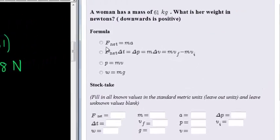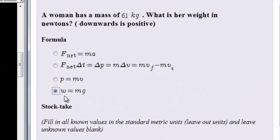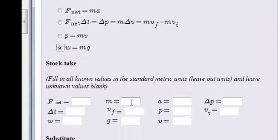So let's put that in here. We know we're using this formula. Weight is equal to mass times gravity. So mass we have as 61.